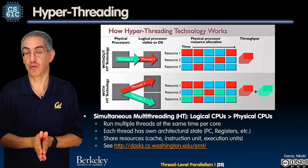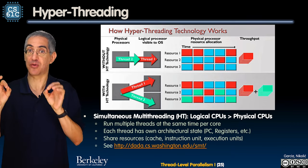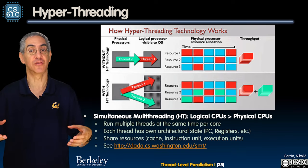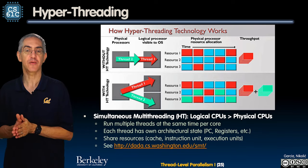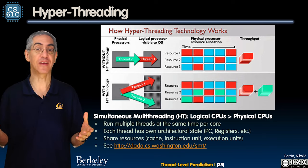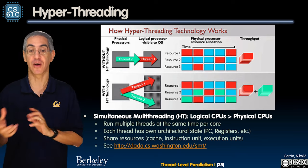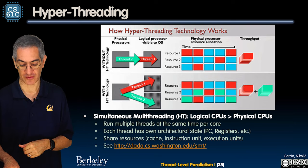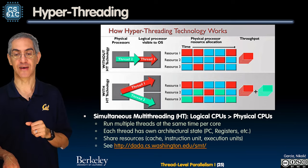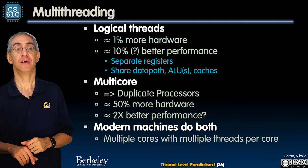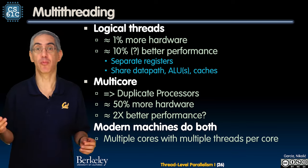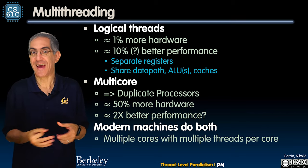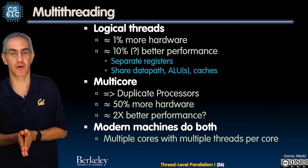In this model of simultaneous multi-threading, two threads are working on one core at the same time. You have the number of logical CPUs greater than the number of physical CPUs — 'CPU' meaning core here. So one physical CPU, maybe two logical CPUs. Each thread has its own state: PC, registers, etc. We can share some resources like cache and the instruction unit. There's a whole group at the University of Washington that has studied simultaneous multi-threading — the SMT group — so check that out. A little bit more hardware, mostly the same hardware; add some registers and a PC, and all of a sudden you have two different hardware threads on one core. Pretty powerful.